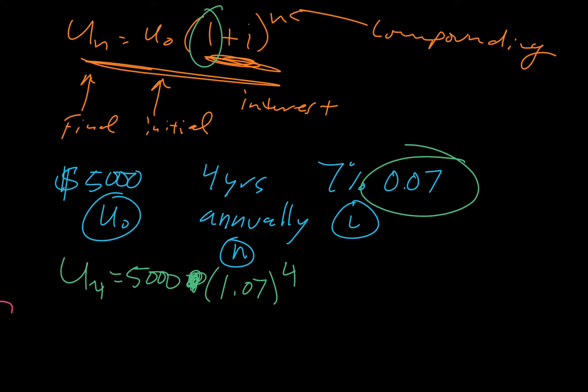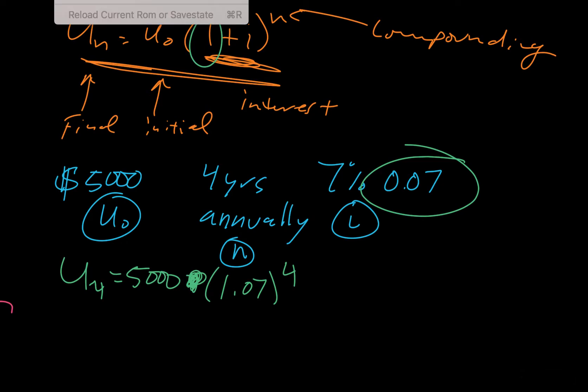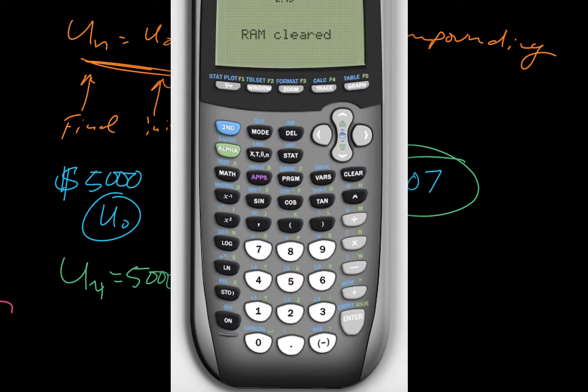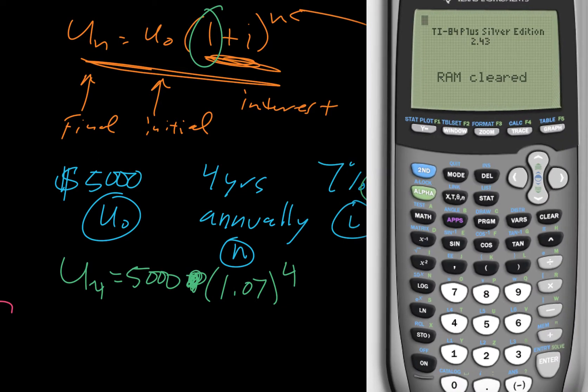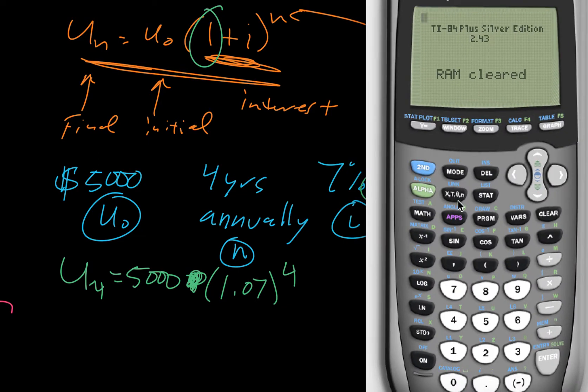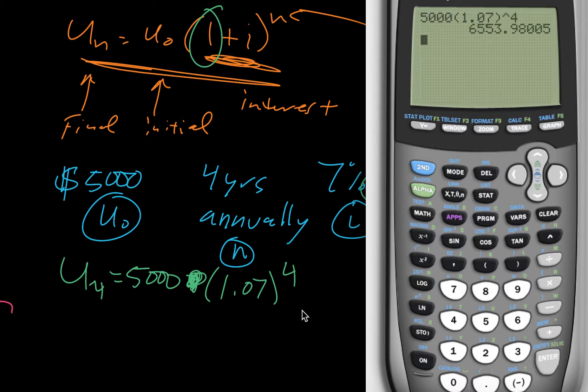Okay. So we come to our calculator. And we just type it in. So we say 5,000, parenthesis, 1.07. Raise that to the 4. And we get 6553.98.